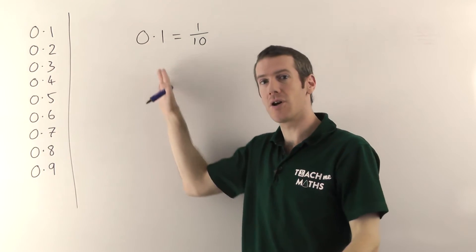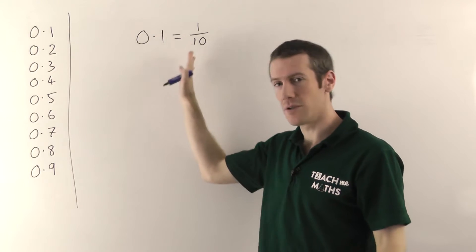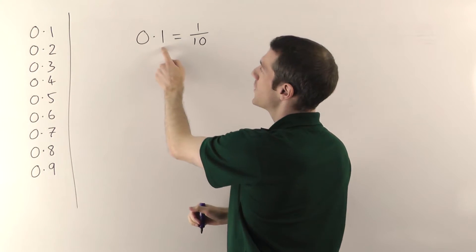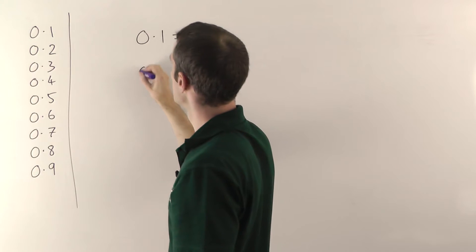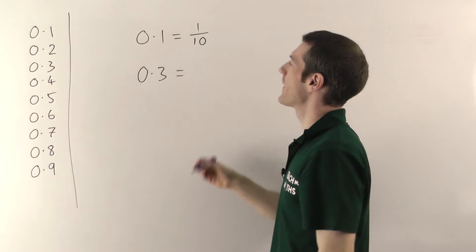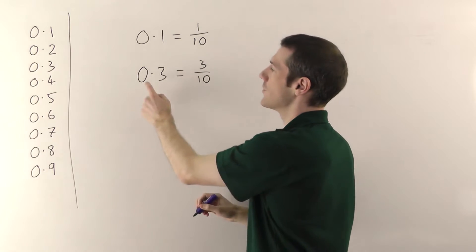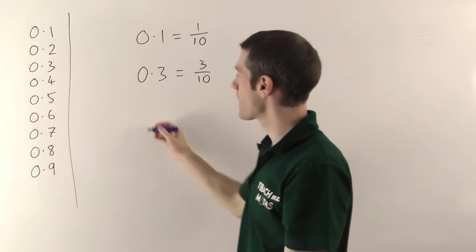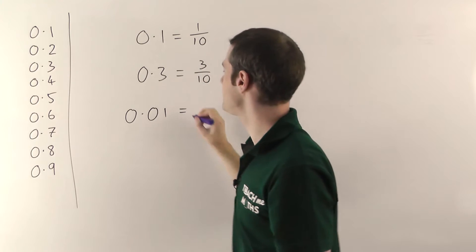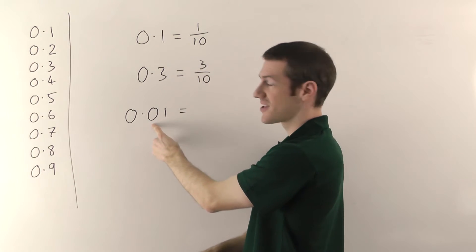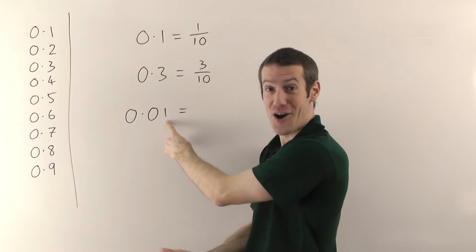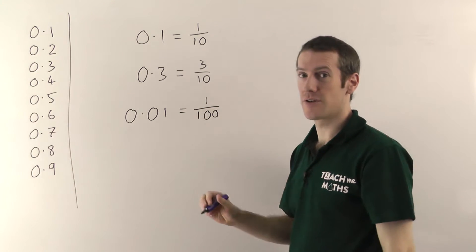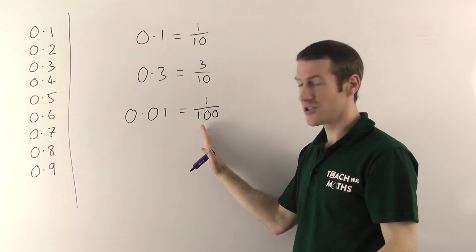If you're not sure about place value and columns, go and watch the place value video — that will lay it all out for you. The key point is that 0.1 is a tenth by definition. Equally, 0.3 would be 3 tenths — no units, 3 in the tenths column. If we had 0.01, that's no units, no tenths, and the next column over is hundredths. So you've got one hundredth — by definition, this is the same as one hundredth. There's no maths that gets you there; it's just the definition.